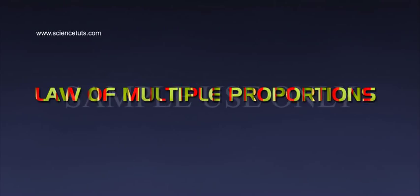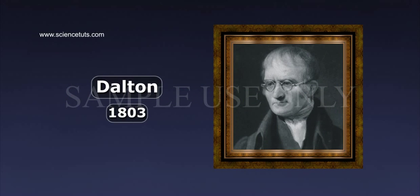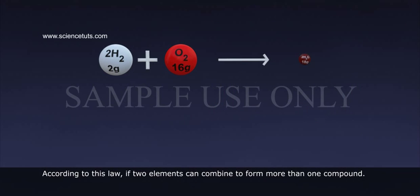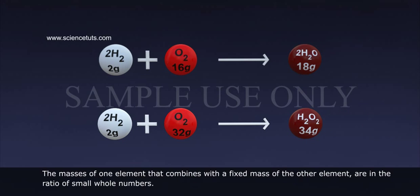Law of Multiple Proportions. This law was proposed by Dalton in 1803. According to this law, if two elements can combine to form more than one compound, the masses of one element that combines with a fixed mass of the other element are in the ratio of small whole numbers.